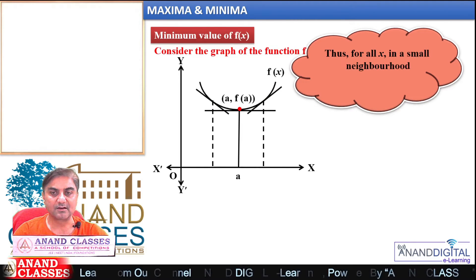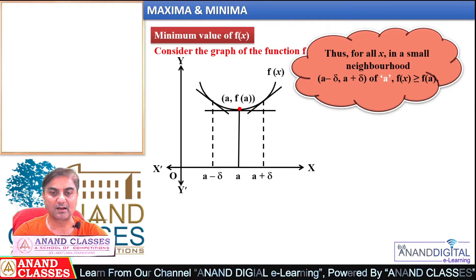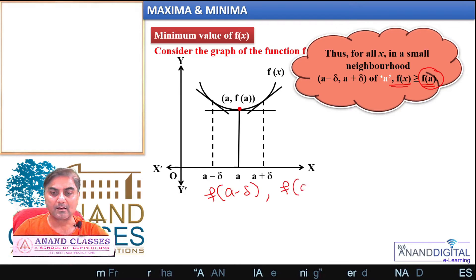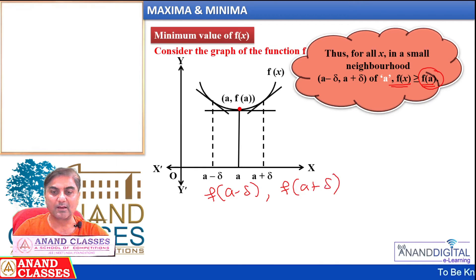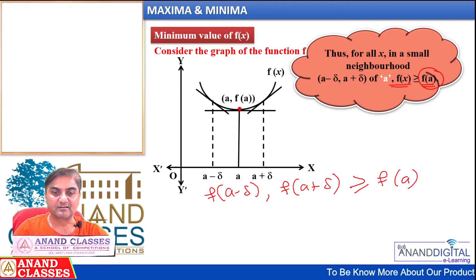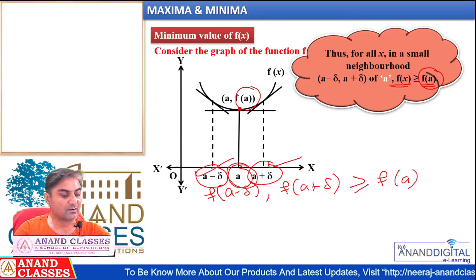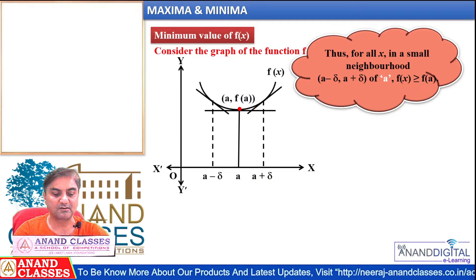Thus, for all x in the small neighborhood (a − δ, a + δ), f(x) ≥ f(a). This means f(a) will be the smallest value. Whether we take f(a − δ) or f(a + δ), both are greater than f(a). At point a, f(x) has the smallest value — that is the minimum value of the function f(x).